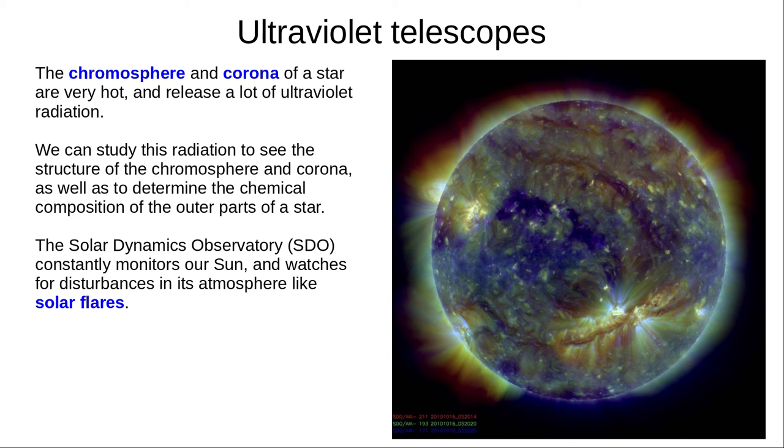And finally for today, ultraviolet. The chromosphere and corona of a star are very hot and release a lot of ultraviolet radiation. We can study this radiation to see the structure of the chromosphere and corona. And we can use ultraviolet spectroscopy to determine the chemical composition of the outer parts of a star. The Solar Dynamics Observatory constantly monitors our sun and watches for disturbances in its atmosphere like solar flares, as you can see here.